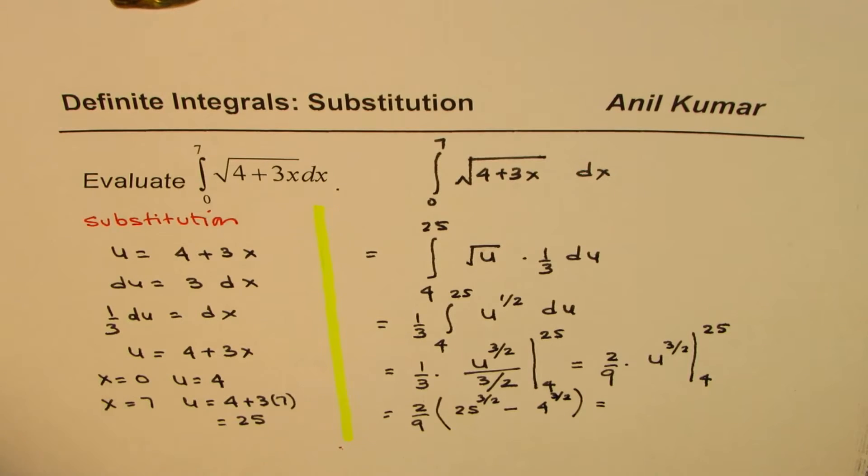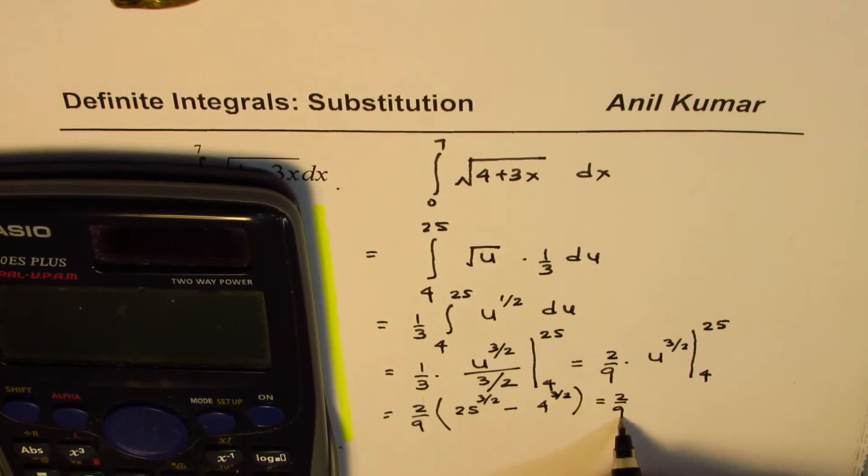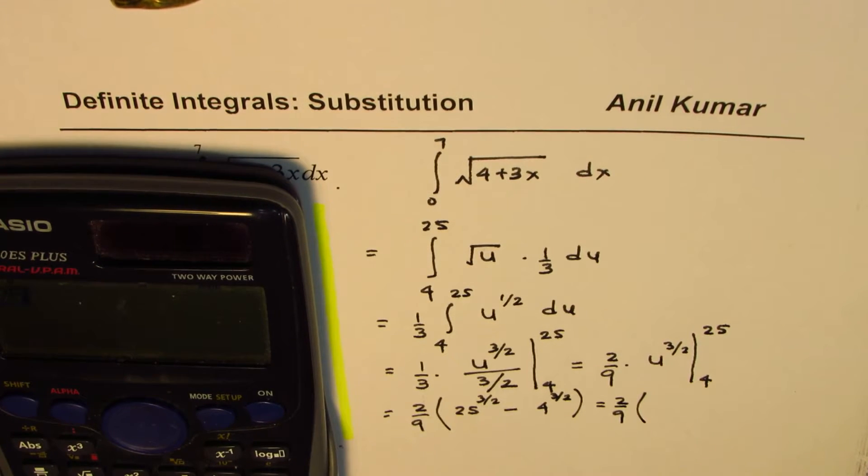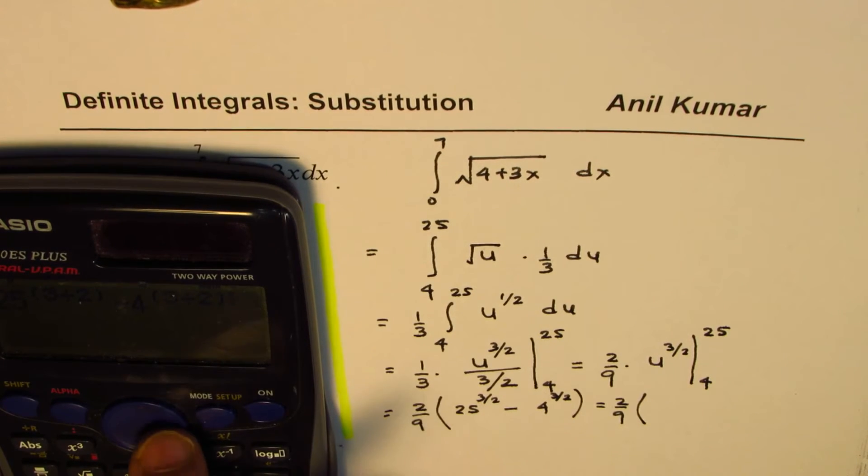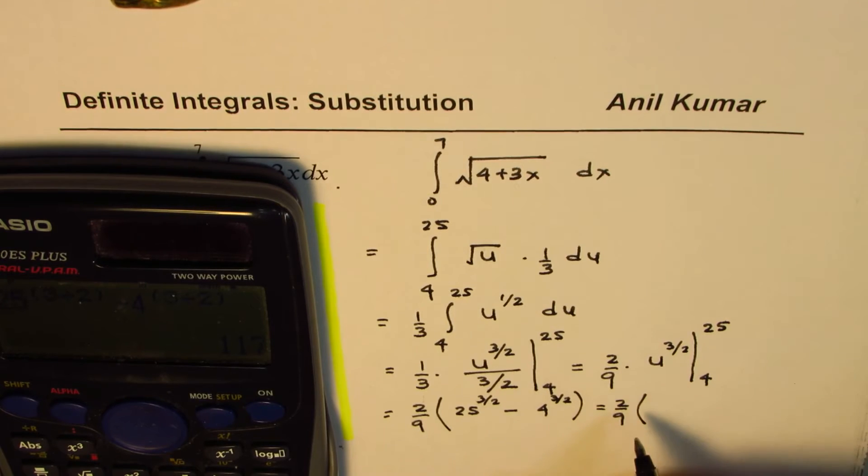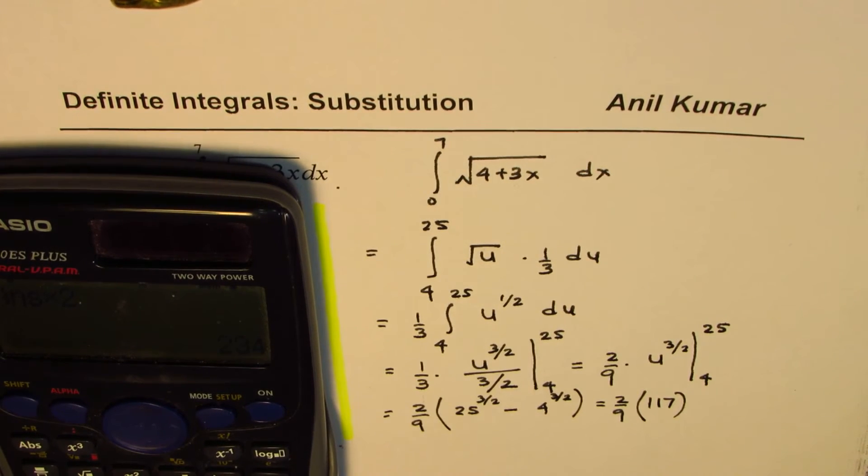Which is equal to, we can use the calculator to get this answer. So, we have 2 over 9, 25 to the power of 3 divided by 2, minus 4 to the power of 3 divided by 2, equals to, so what we get is 117, and we will multiply by 2 over 9, equals to 26.